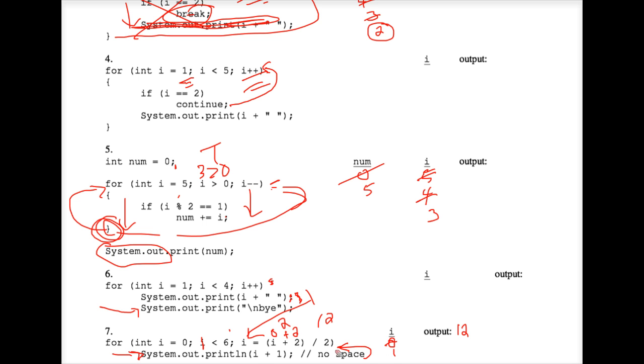We loop back up to the top. We have to check the incrementing expression again. We carefully plug in i, which is 1. 1 plus 2 is 3. 3 divided by 2.